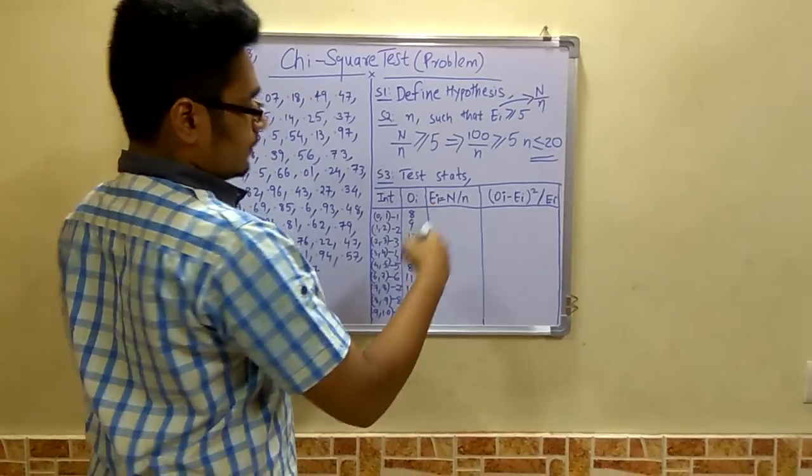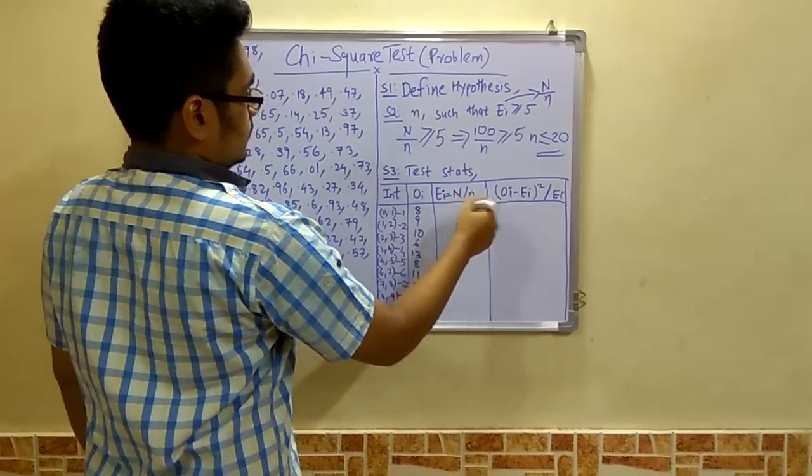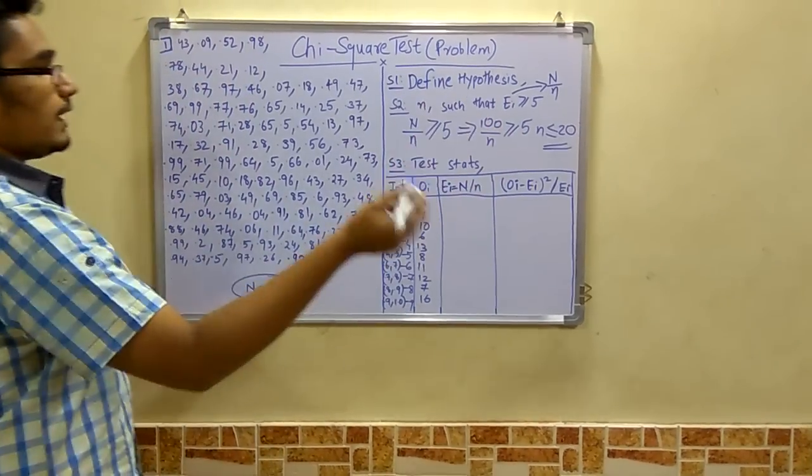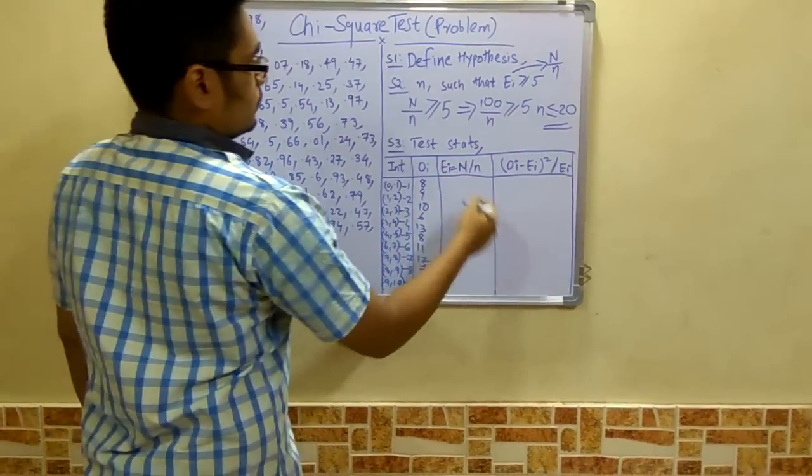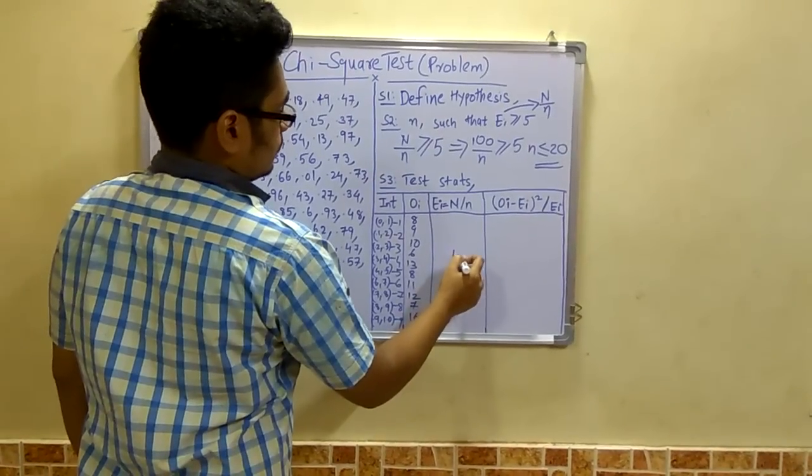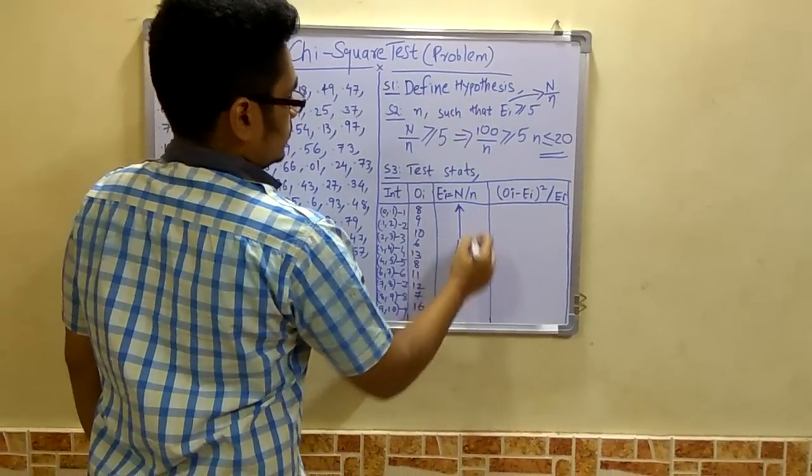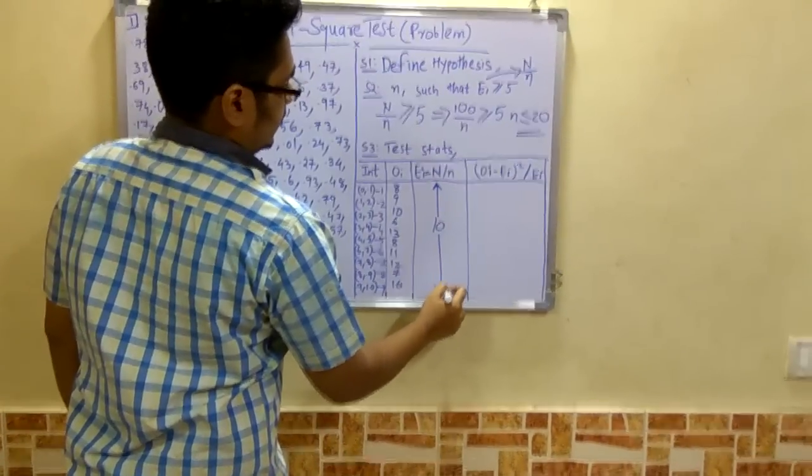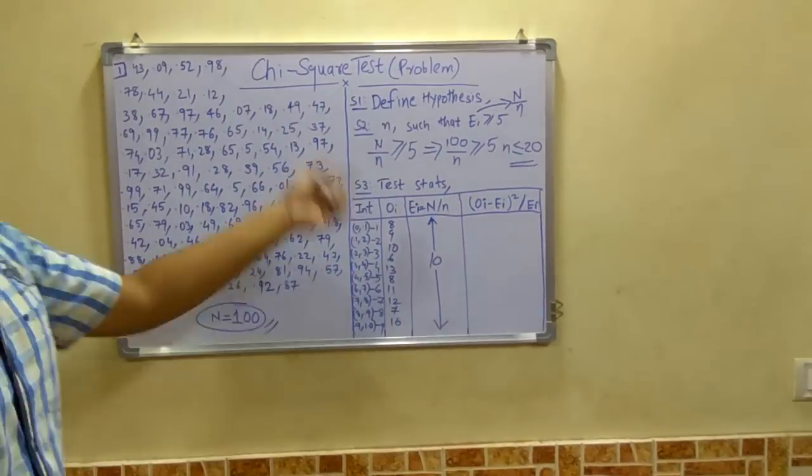Now after you do this you have to calculate this ei. Make sure that this capital N, this N is 100, and this small n that is less than or equal to 20. So it becomes easy for you to calculate. This turns out to be 100 upon 10, so it comes out to be 10. So for all these values it is 10, so you need not write it again and again for this whole column.